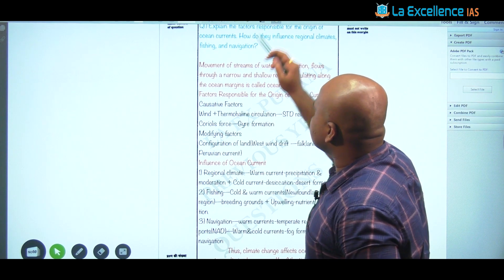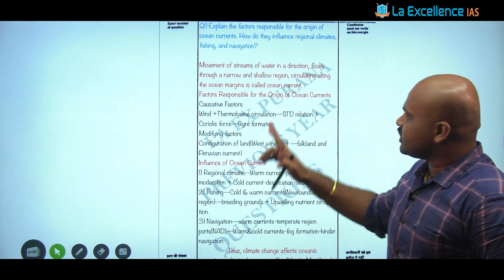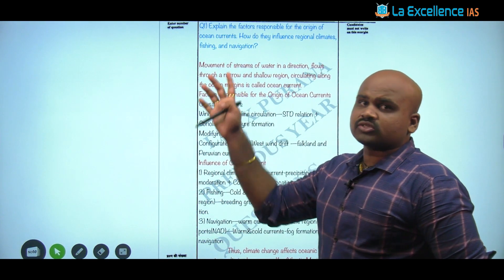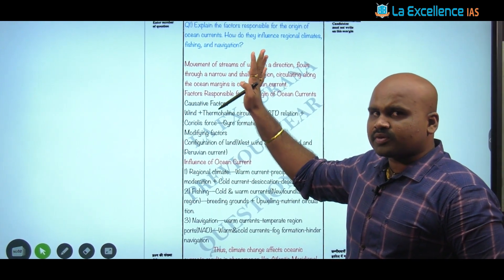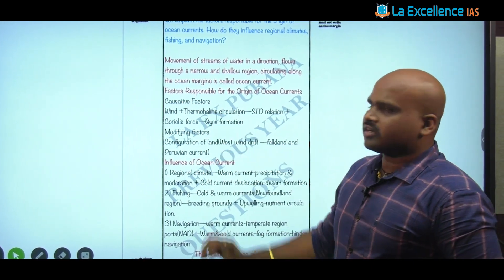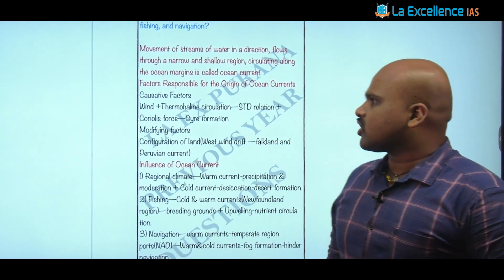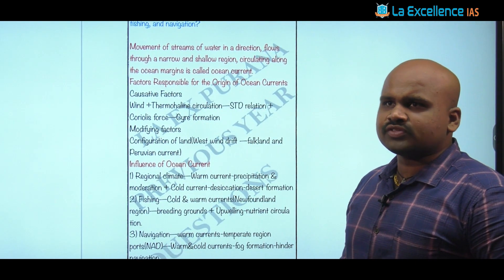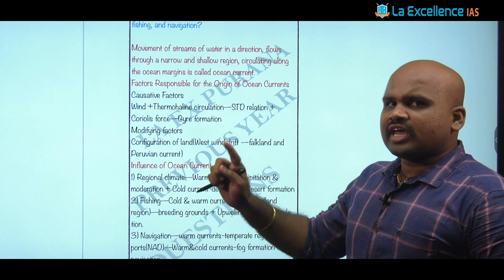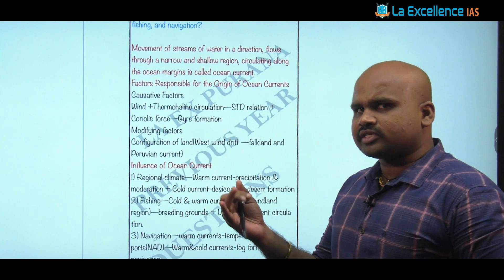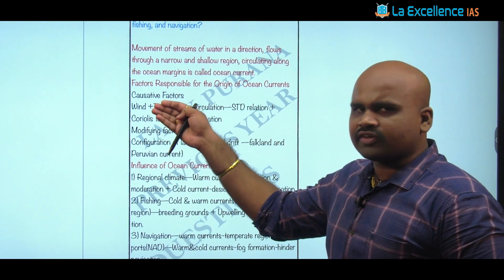Looking at the content part: in the introduction you can define what oceanic currents are. Once we discuss the concept in the introduction, then we talk about the factors. As discussed in the structure, causative factors can be: the wind systems, the Coriolis force, thermohaline circulation, or variation in STD — that is salinity, temperature, and density — these are the causative factors.